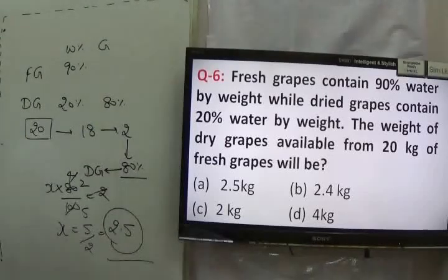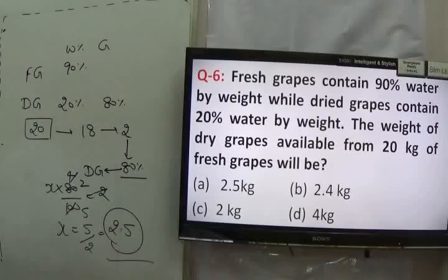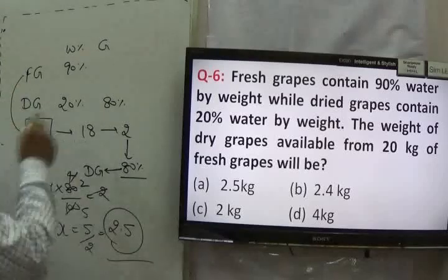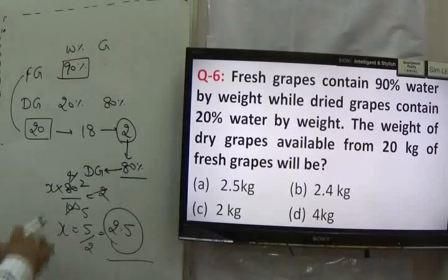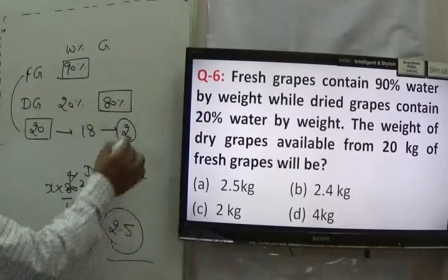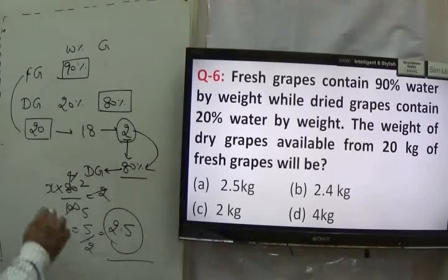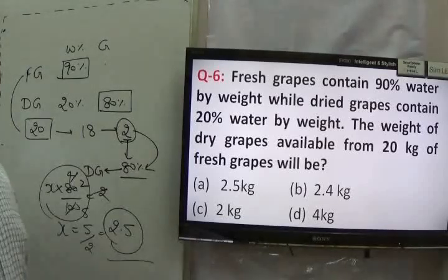Let me clarify the approach. We have 20 kg of fresh grapes containing 90% water and 10% grape content, which equals 2 kg. In dried grapes, grape content is 80% because water is only 20%. So that 2 kg of grape content equals 80% of total dried grapes. Setting up: X into 80 upon 100 = 2, so X = 2.5 kg. That becomes our answer — 2.5 kg of dried grapes can be obtained from 20 kg of fresh grapes.